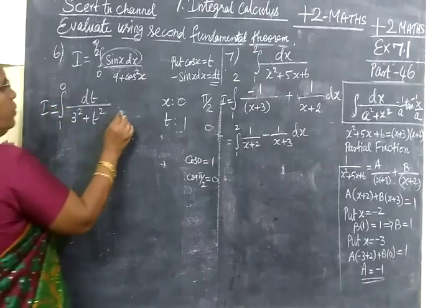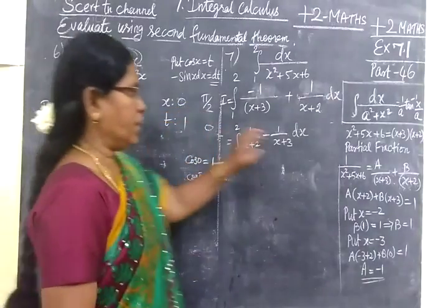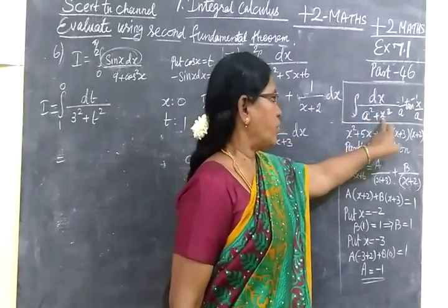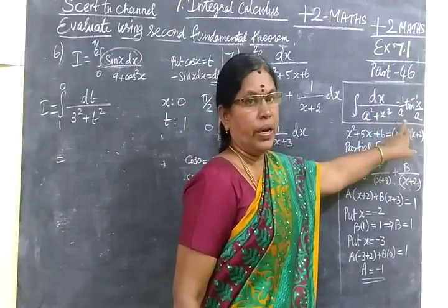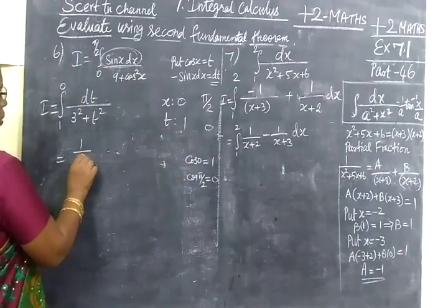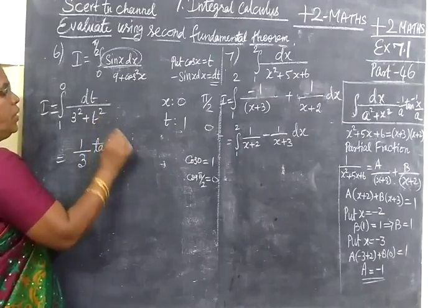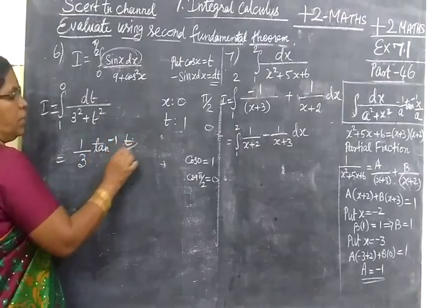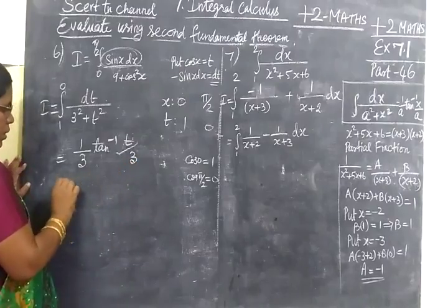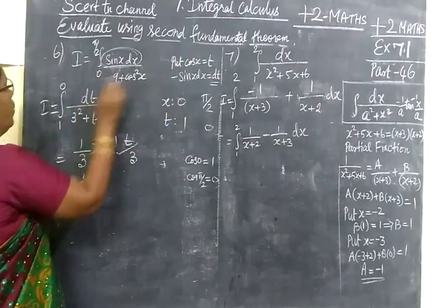So now equal to... This is formula. Integrate dx by a² plus x² equal to 1 by a into tan inverse x by a. x is 0, so 1 by a into tan inverse x is y, x is the singular e, y a. dt equal to 1 by a.